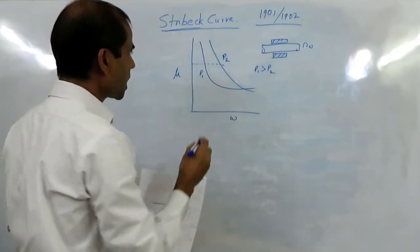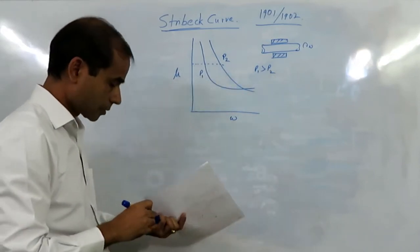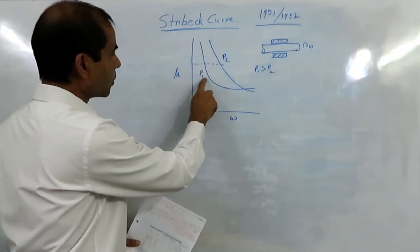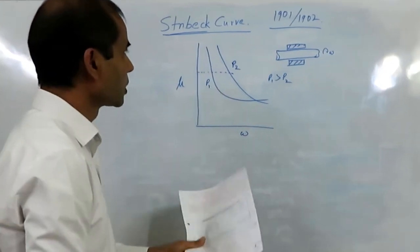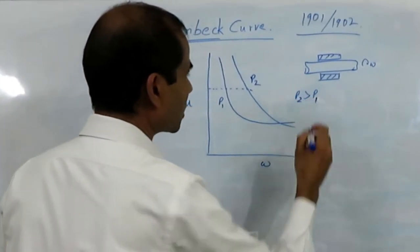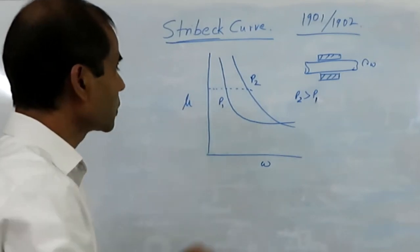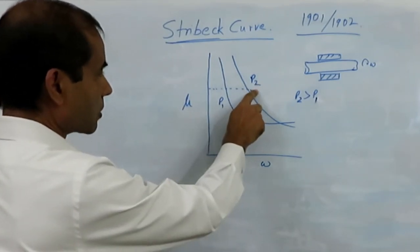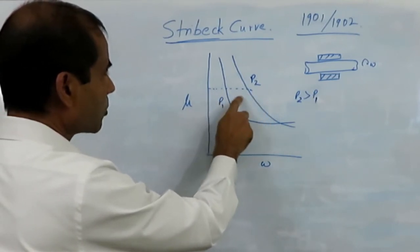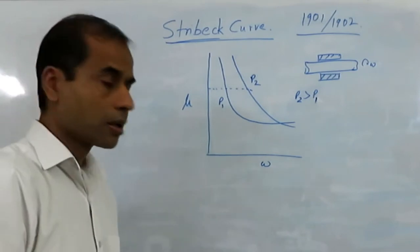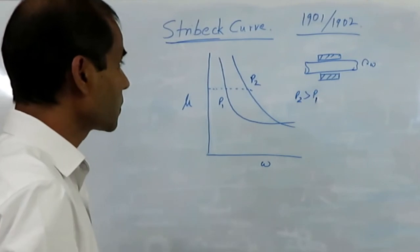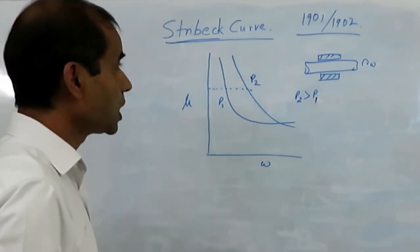To obtain the same coefficient of friction — this is P2 and this is P1 — if we are going to increase the pressure, to obtain the same coefficient of friction we need to increase the RPM, the speed of the shaft. This was the basis of his initial experiments.